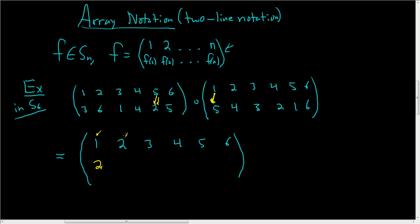2 goes to 4, and 4 goes to 4, therefore 2 goes to 4. Let's do 3: 3 goes to 3, and 3 goes to 1, so 3 goes to 1. 4 goes to 2, and 2 goes to 6, so 4 goes to 6.